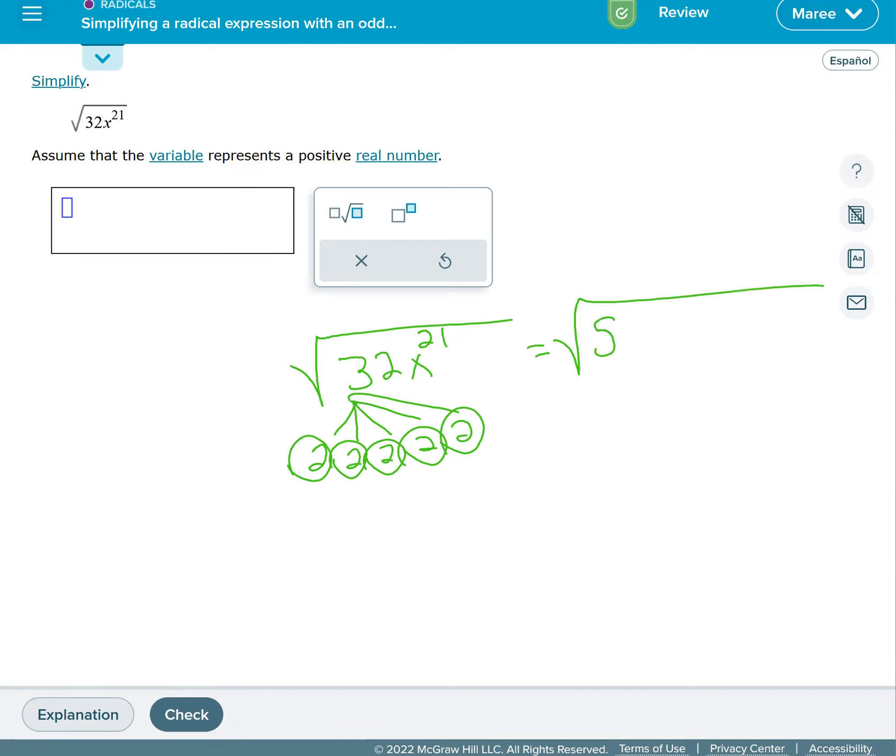Oh my goodness. I just wrote a five. That's funny. I'm going to put five twos multiplied together. And then I'm going to put x to the 20th because that's an even number and I can take out x to the 10th.